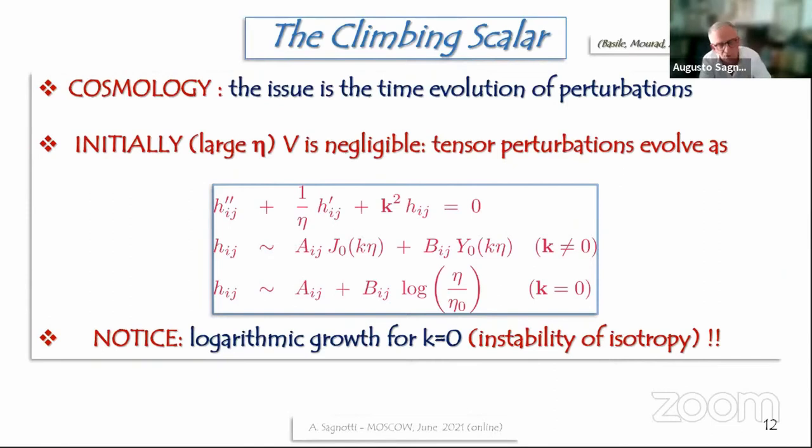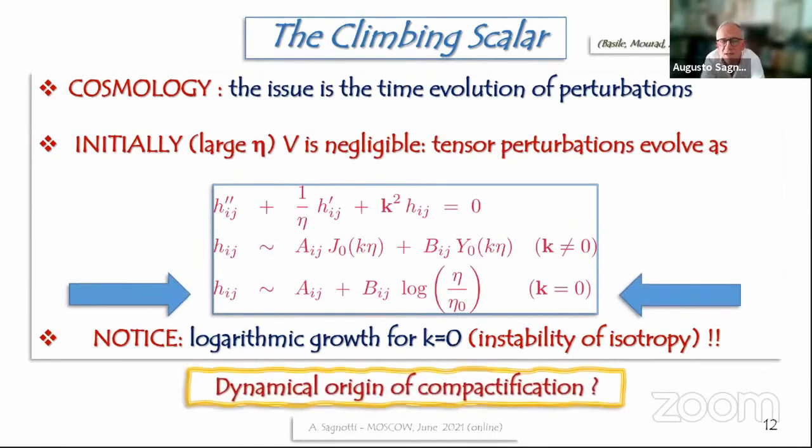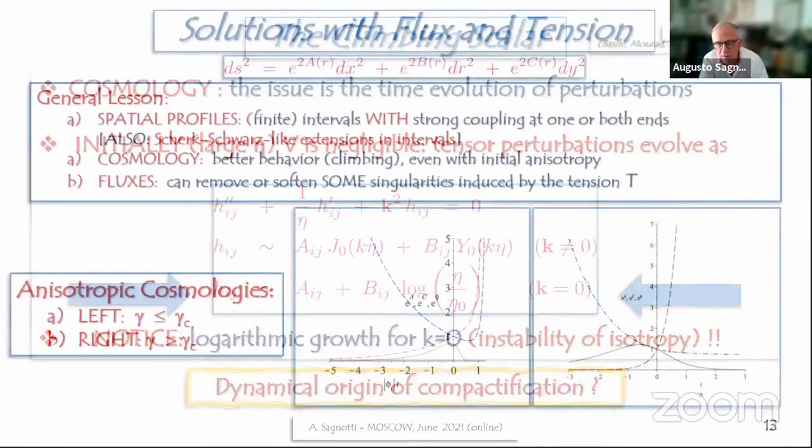The perturbations with k different from zero, which means, you know, inhomogeneous perturbations are done. The Bessel functions are done when the argument is large. At least they are bounded. What happens is, on the other hand, the perturbations with k equals zero, they grow. They grow logarithmically, but they grow. So in other words, in this system, there is something that is probably even more interesting as a clue, given our incomplete access to the actual equations, which is an instability of isotropy. Now, it's very natural to speculate that the instability of isotropy could be pointing toward a dynamical origin of compactification, if you want, compactification by chance.